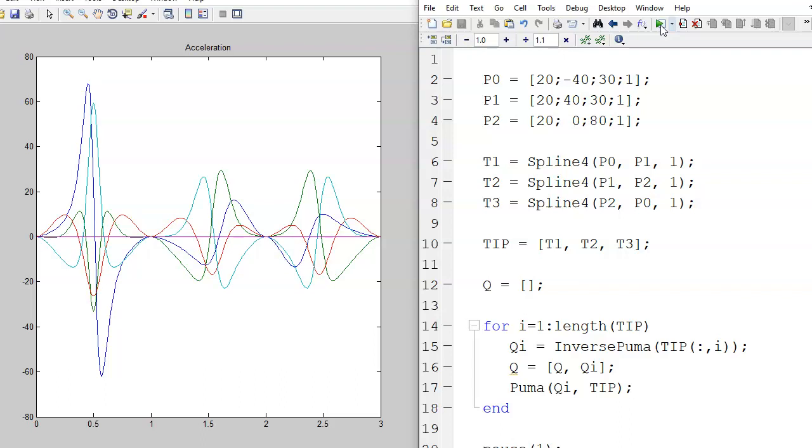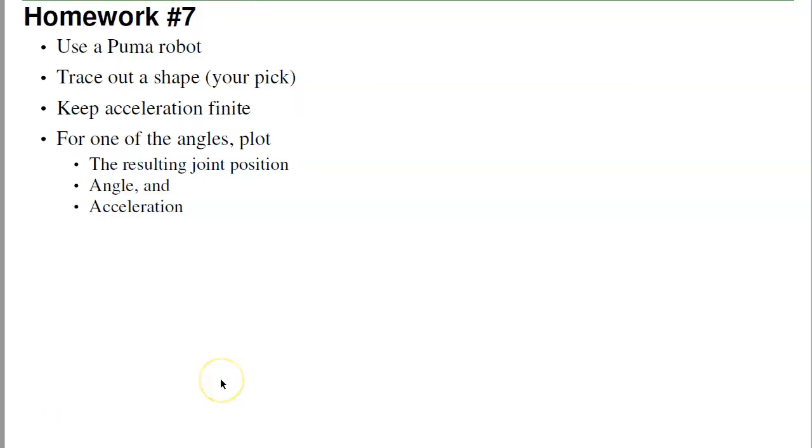The homework for this week is to pick a shape, any old shape that you like, and then trace out that shape, which basically means doing an interpolation, a spline curve interpolation between the different points. Your choice of cosine, cubic, or combining the two. The one constraint, though, is that I want to have finite accelerations at all points. So that's lecture number seven, path planning for ECE 761 robotics.